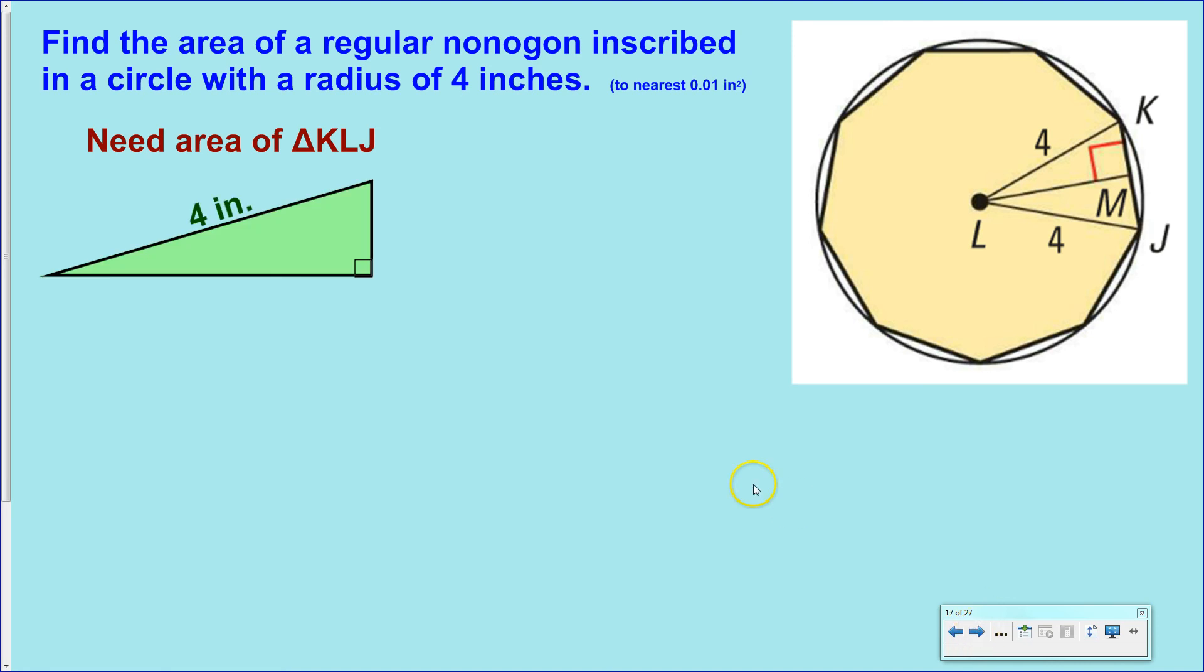So, let's start drawing this triangle, everything we know about it. And instead of drawing triangle KLJ, I'm only going to draw half of it. So, triangle KLM. Okay, so this is triangle KLM that I'm drawing with a right angle in the lower right-hand corner there. I know that that is four inches. And that's about it. That's all that's directly given to me.